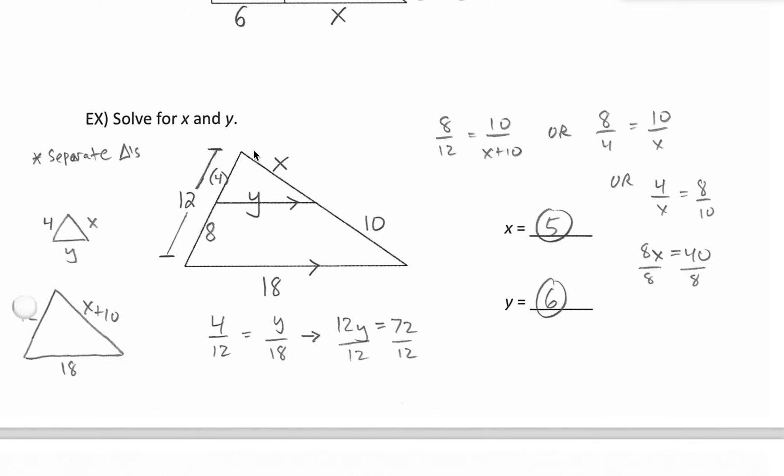So if I take this top triangle off, I have a left length of 4, bottom length is y, and right length is x. My total big triangle had a length on the left of 12. I punched a hole out of that, but that was 12 right there. On the bottom, I have a length of 18. And on the right side, combining these two, I have x plus 10.